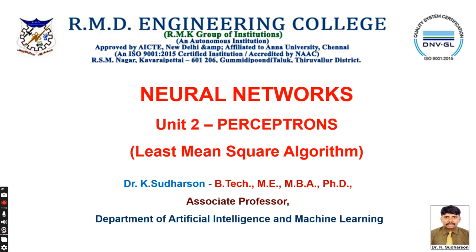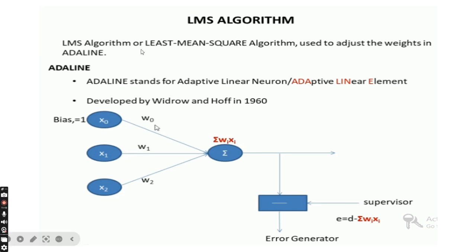Now we will see the LMS algorithm. The LMS algorithm, or Least Mean Square algorithm, is used to adjust the weights in the Adaline — Adaline stands for Adaptive Linear Neuron, or adaptive linear element. The LMS algorithm focuses on the filtering process and the adaptive process, and was developed by Widrow and Hoff in 1960.